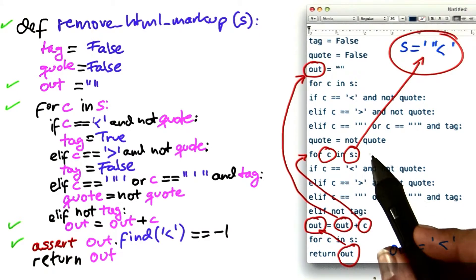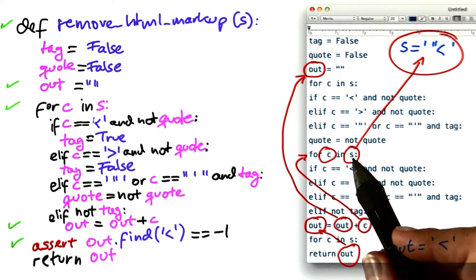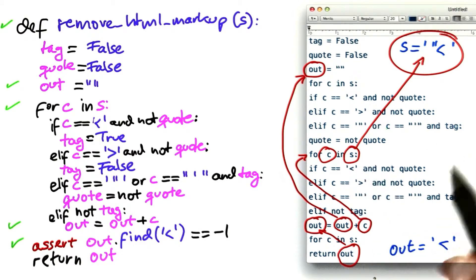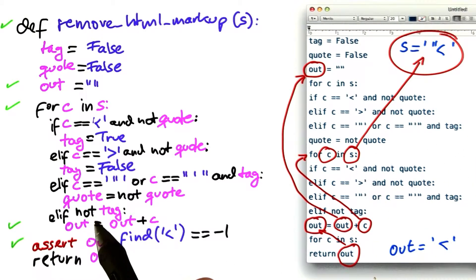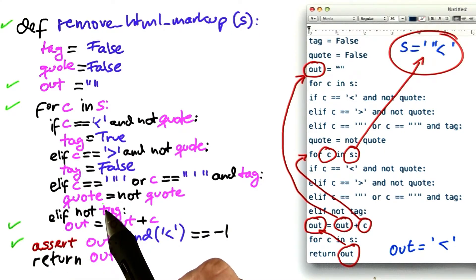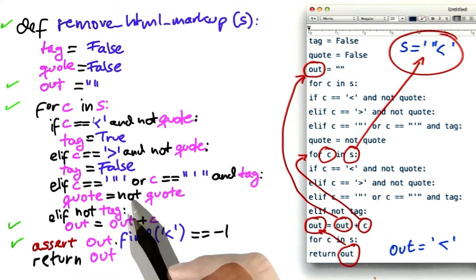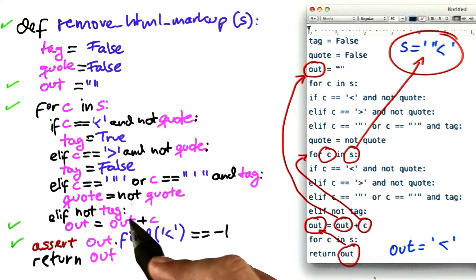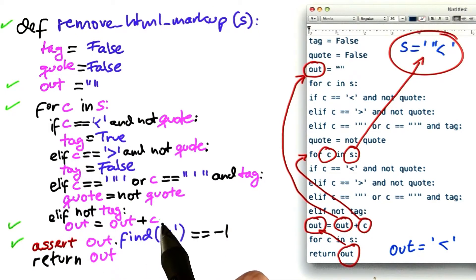So far, we only looked at dynamic data dependencies, but of course there are also dynamic control dependencies. Every condition that gets evaluated — that is executed — and controls whether a statement in question is executed or not, builds a dynamic control dependency.